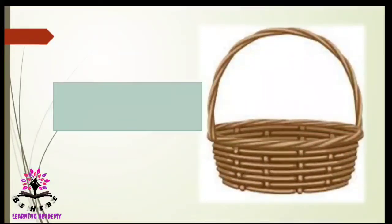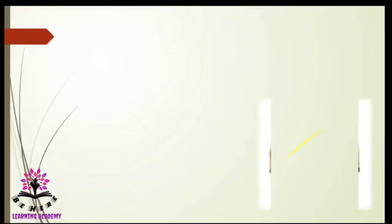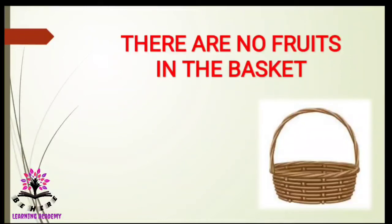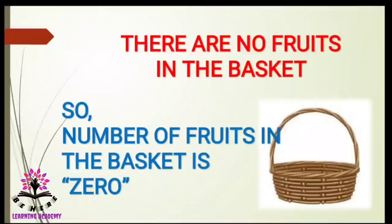What about this basket? There are no fruits. There are no fruits in the given basket. So, the number of fruits or the apples in the basket is 0. You see the empty basket here, so there are no fruits in the basket. The number of fruits in the basket is 0.